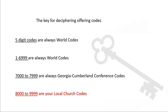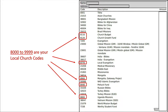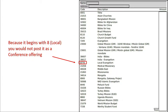Last but not least, code numbers from 8000 to 9999 are assigned as your local church codes. Your church probably won't use them all, but whatever local codes you have will range between these two numbers. See here on this Adventist Giving donation envelope — there are a number of local codes that this donor chose, all in the local code range. 8770 for local evangelism is one of those donations. Since it begins with an 8, it is a local fund, so it shouldn't be posted as a conference or world evangelism offering.